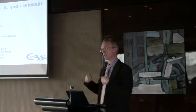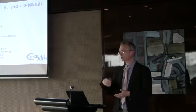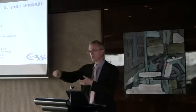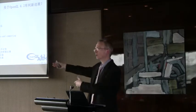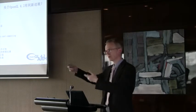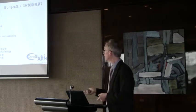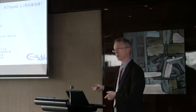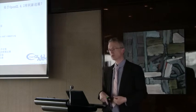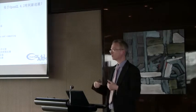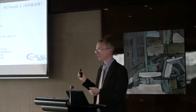Instanced transform feedback allows you to make an instanced drawing call where you draw multiple copies of an object with different positions — a whole herd of animals or a group of soldiers can be drawn with one drawing call. The new feature is that you can capture those into a buffer which the CPU can inspect or which can be used for multi-pass rendering. This also helps performance.